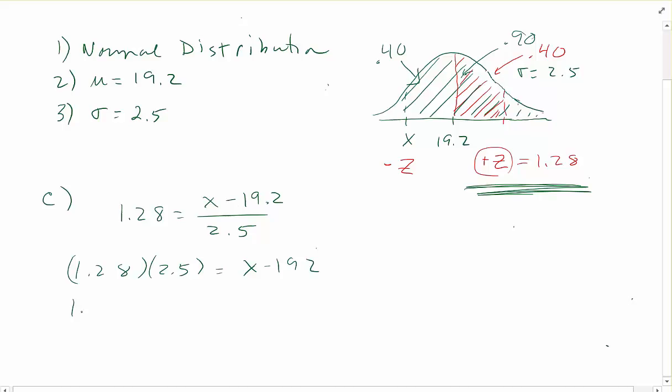and add 19.2, so X is equal to 22.4. So let's see, the question is 90% of the time at least how many beds will be empty? 24 beds subtract 22.4 is 1.6.